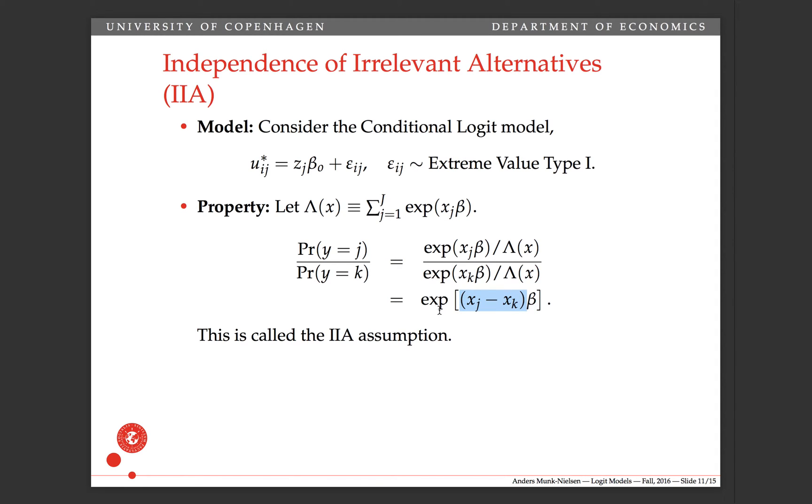Okay, this is important. This is what I said, that the relative probability of one car to some other car, this could be Tesla and this could be BMW, depends on XJ minus XK and beta. But it doesn't depend on the characteristics of all the other cars that are inside of this denominator function. So this is called the IA assumption or the IIA property of the logit model.